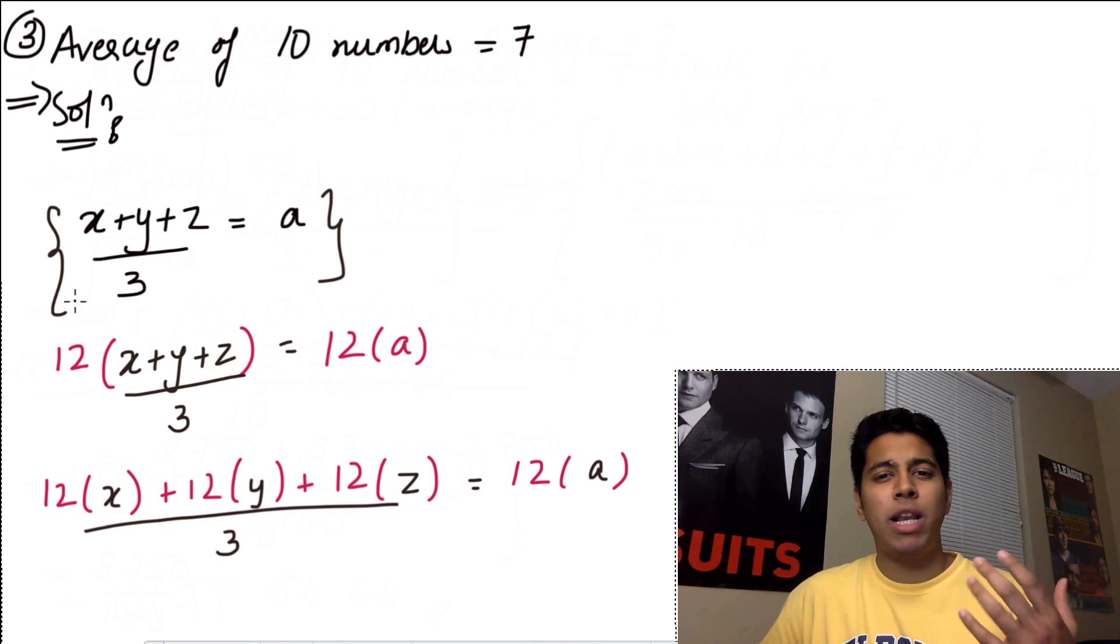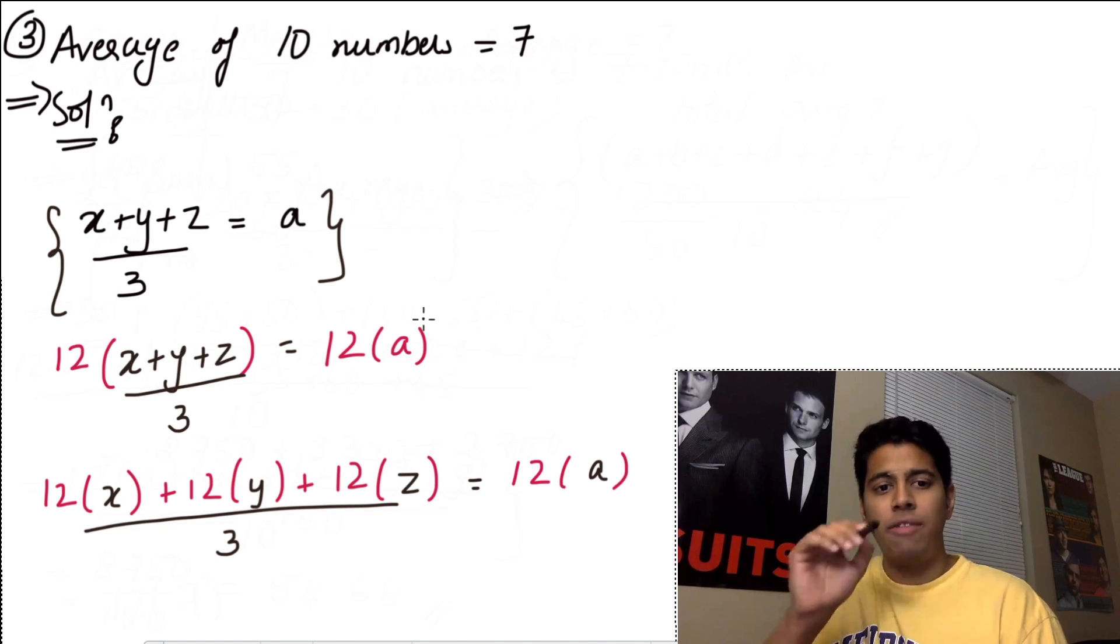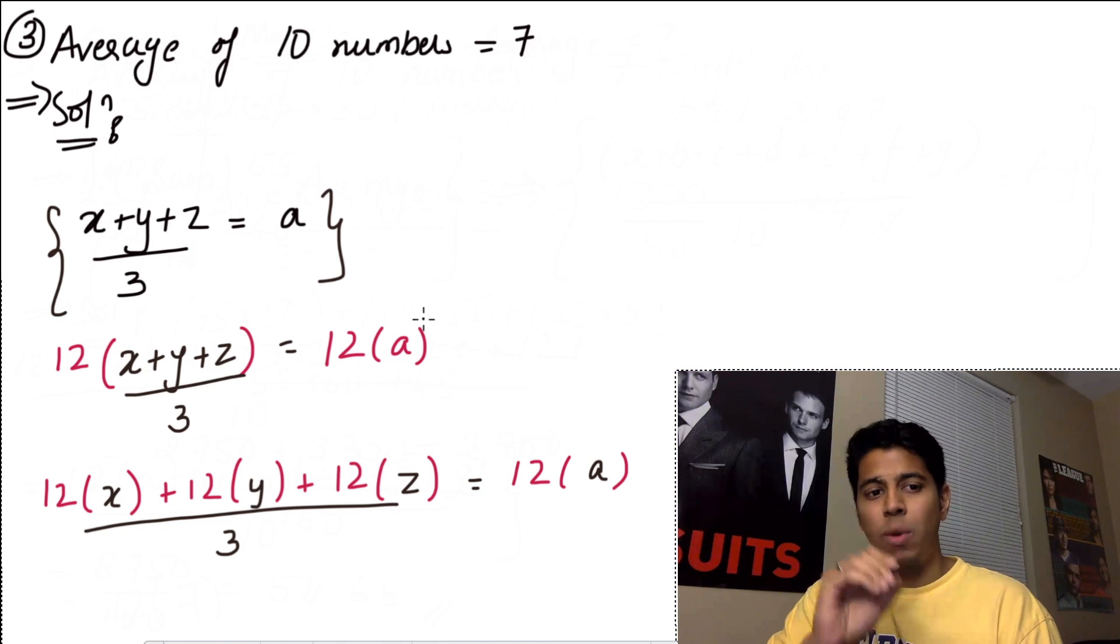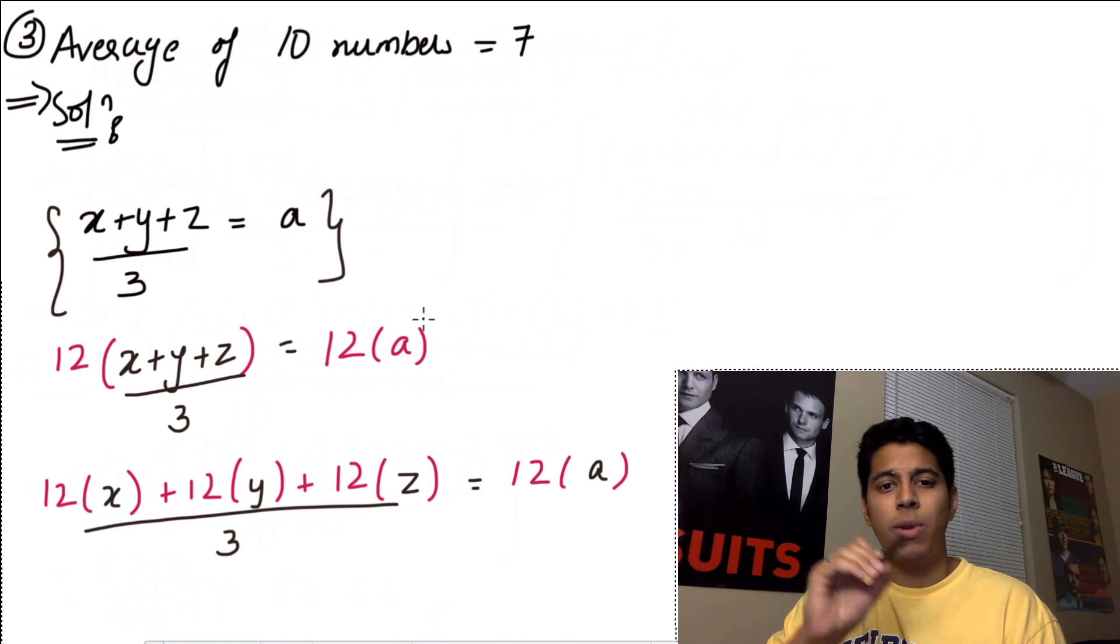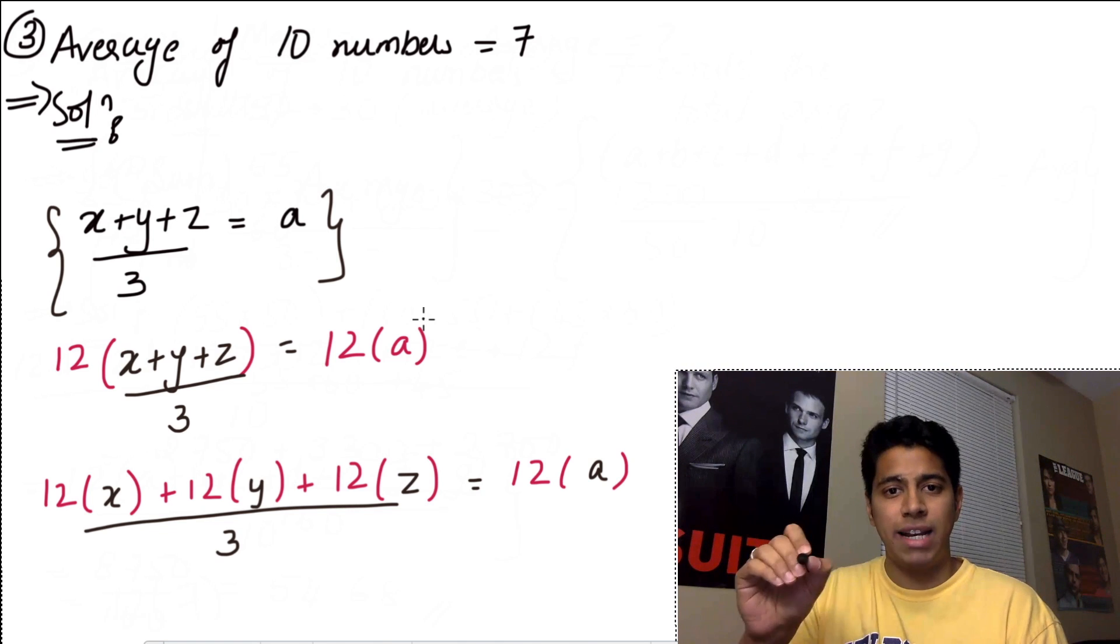Now what I'm going to do is, suppose I multiply 12 on both sides of the equation. Now here I've multiplied 12 into x plus y plus z by 3 is equal to 12a. Now if I simplify it in the next step, you see that 12 gets multiplied into x plus 12 gets multiplied into y and 12 gets multiplied into z. So now you have 12x plus 12y plus 12z divided by 3 is equal to 12a.